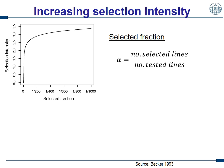Let's look at how we could increase the selection intensity. Selection intensity is a function of the selected fraction alpha, which is the number of selected lines divided by the number of tested lines. If we select one of the very best lines out of 200, 400, 600, 800, or 1000, on the y-axis you see the selection intensity.